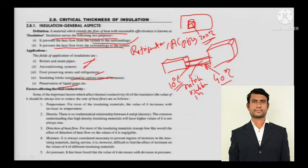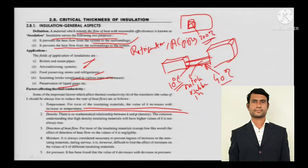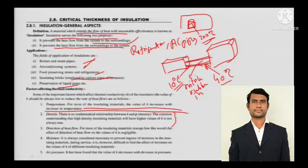Factors affecting thermal conductivity: the value of k should always be low to reduce the rate of heat flow. Temperature — for most insulating materials, the value of k increases with increase in temperature. This is a very important point. Density — there is no mathematical relationship between k and density (ρ); the common understanding that high-density insulating materials will have higher values of k is not always true.